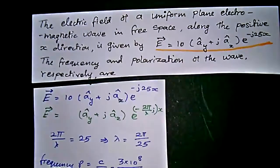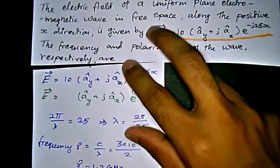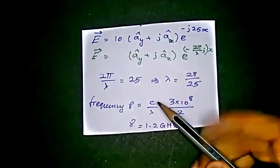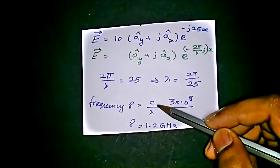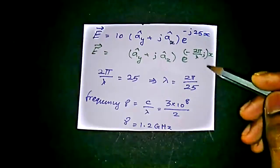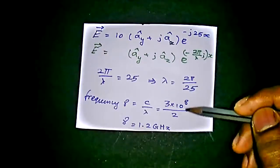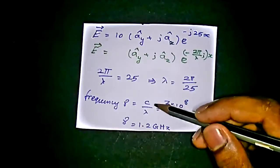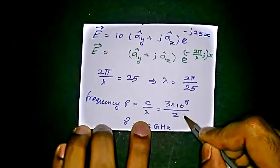We know that wavelength is related to frequency. Using the speed of light, we get frequency equal to c divided by λ, where c is the speed of light and λ is the wavelength we found using the electromagnetic wave equation. Applying c = 3 × 10⁸ and λ = 2π/25: